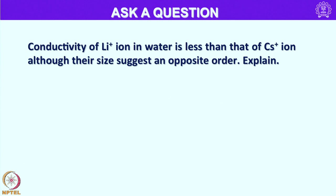Let us look into another question: the conductivity of the lithium-plus ion in water is less than that of the cesium-plus ion, although their sizes suggest an opposite order — explain. The smaller the size of the ion, the greater the degree of hydration. When the size is small, the degree of hydration is more. Thus, Li+ with the smallest size and highest charge-to-size ratio shows the largest hydration enthalpy among all group 1 elements. The degree of hydration decreases moving down the group from lithium to cesium. Due to this difference, the ionic radii of hydrated alkali metal ions decrease from lithium to cesium, so the hydrated ionic radii in aqueous solution decrease in that order.